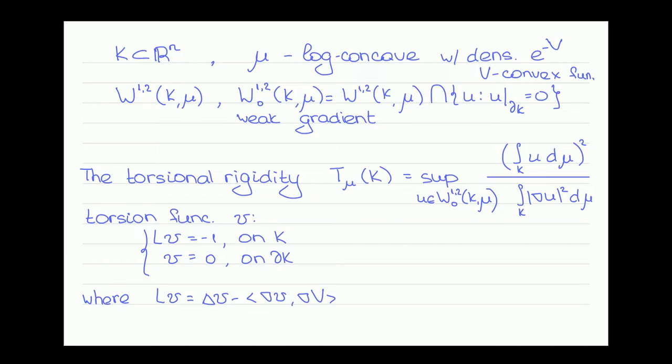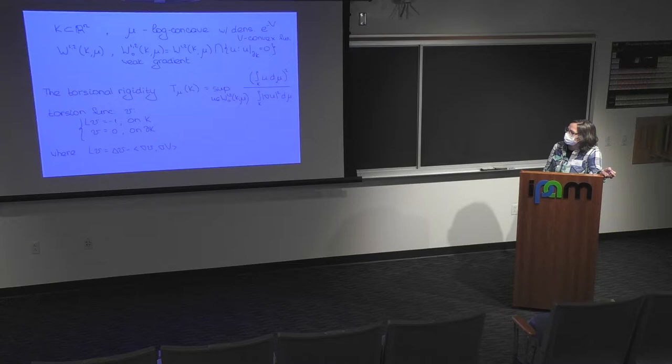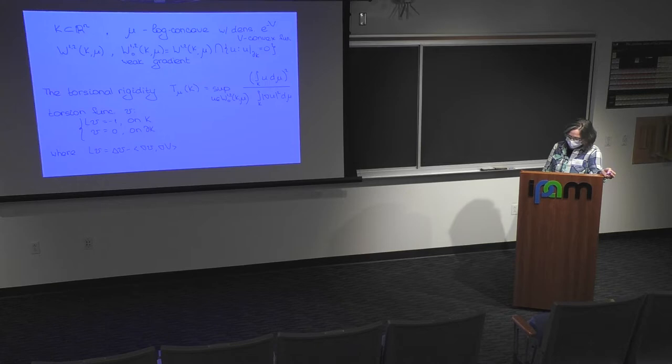We can also define the torsion function V. The torsion function V is a solution of the differential equation LV equals minus one on K, with boundary condition V equals zero on the boundary of K. Here, the operator L is a generalization of the Laplacian operator associated with the measure mu.